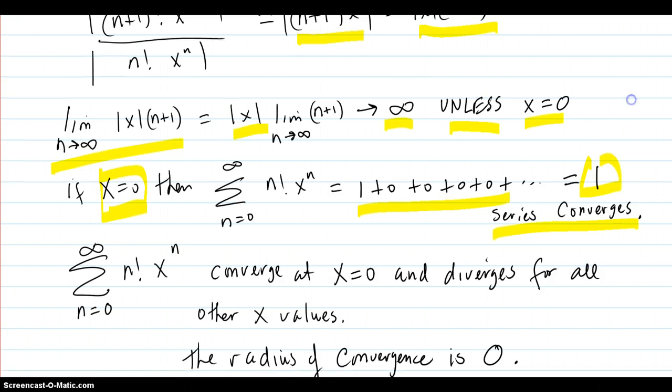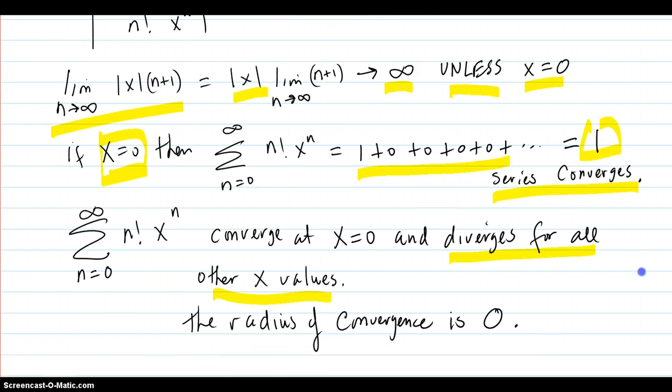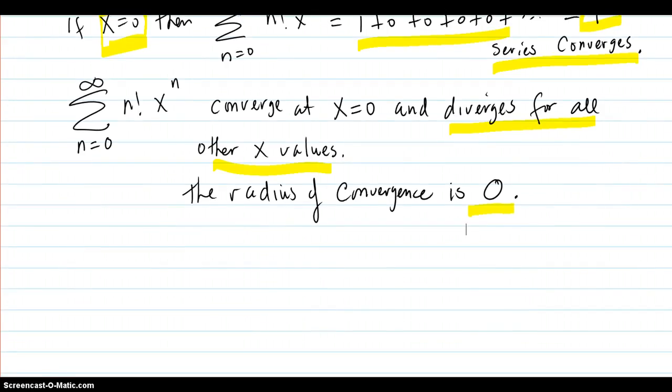But it diverges for all other x values. So the radius of convergence is zero, because it doesn't converge for any other values about the center, other than the center itself, which happens to be zero in this case. So the radius of convergence is zero.